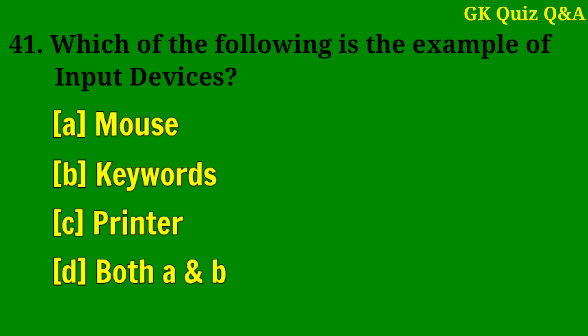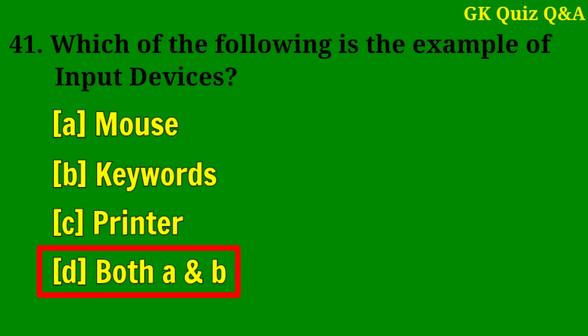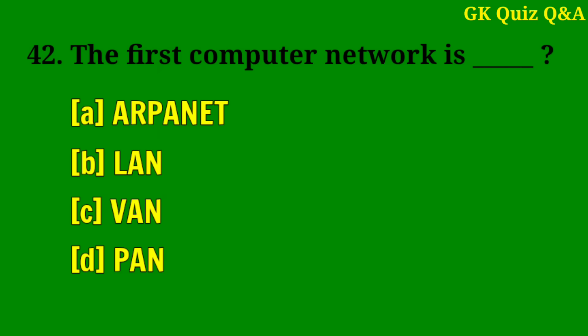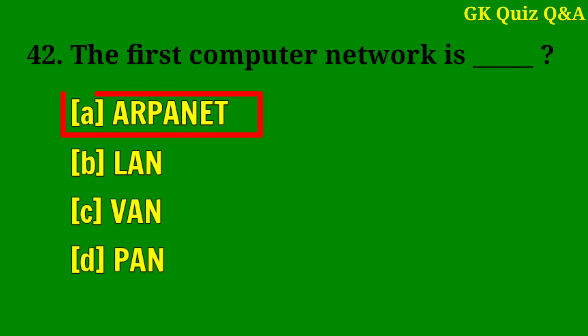Which of the following is an example of input devices? Answer D: Both A and B. The first computer network is? Answer A: ARPANET.